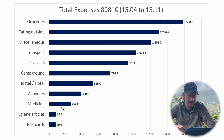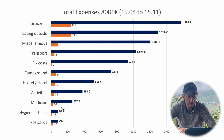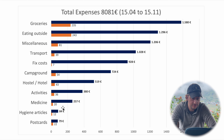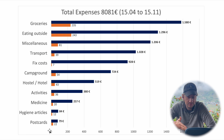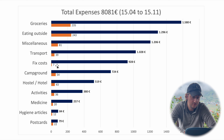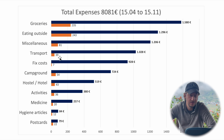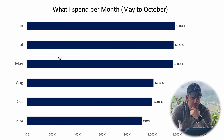I dug a little deeper to understand the data. For groceries the total was 1,580 euros across 235 individual entries. Fixed costs had just seven entries — one per month. Transport had 39 entries; if you deduct the flight which was about 800 euros, there's around 200 euros left across 38 entries — really small amounts usually, except for the flight.